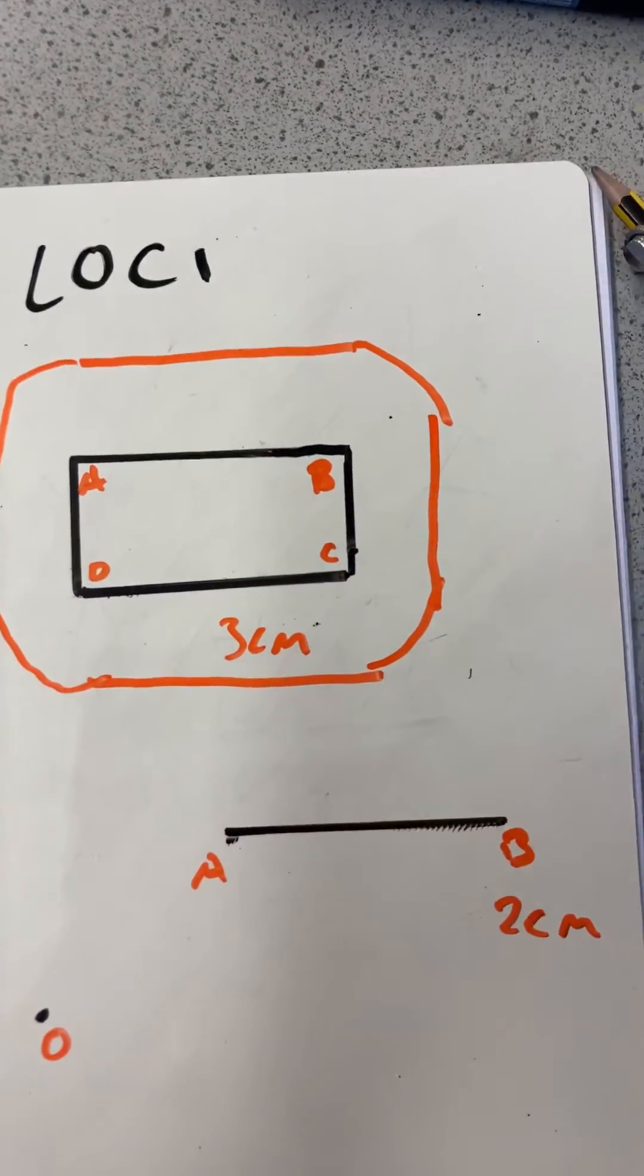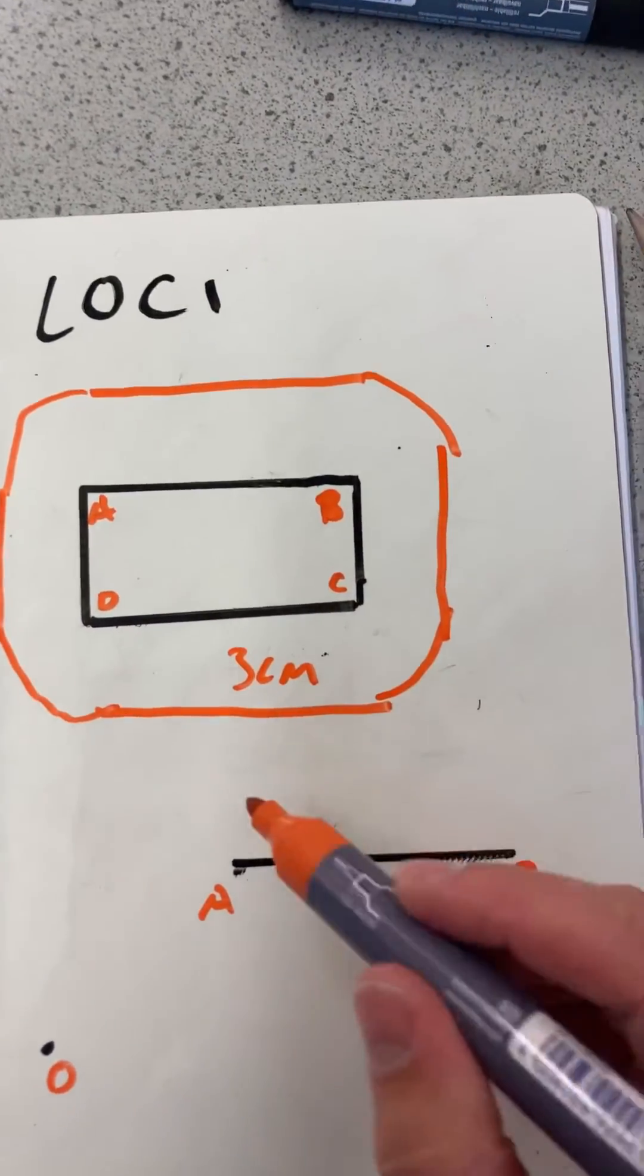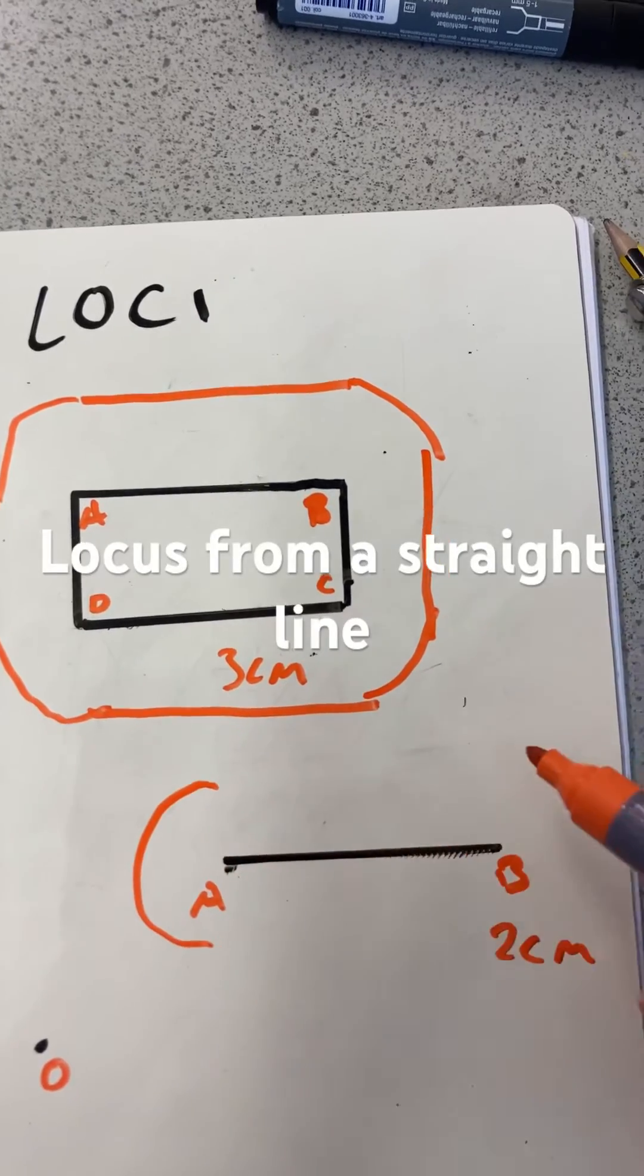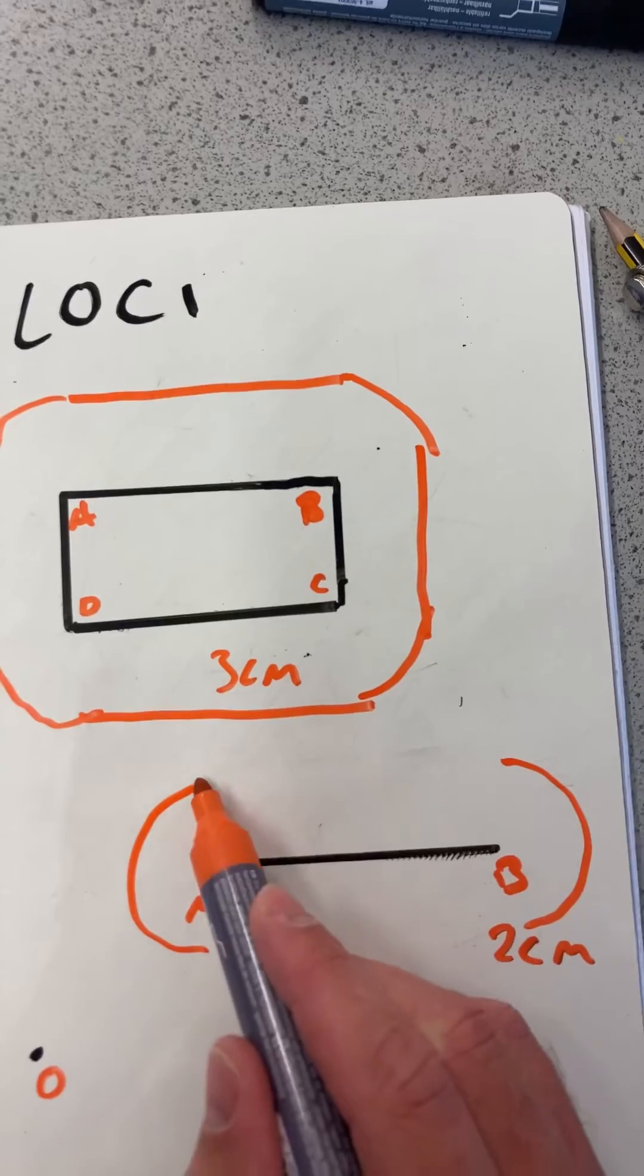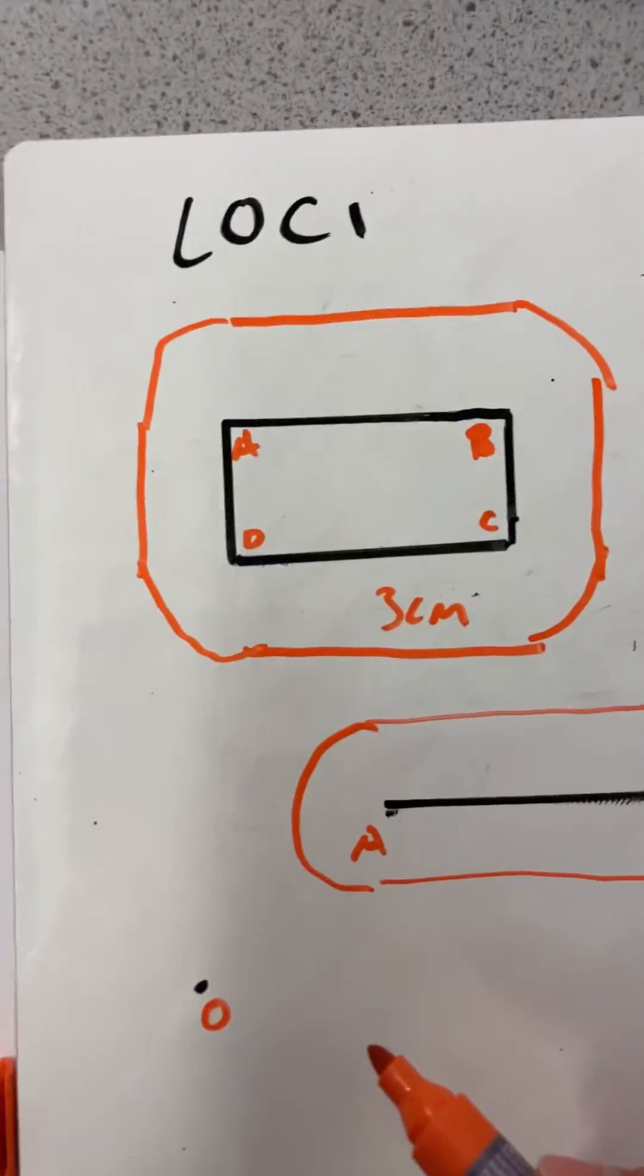Similarly if we had to do two centimeters away from each of these sides we'd use a compass to draw a circle there and there and then use a ruler to draw two centimeter lines there.